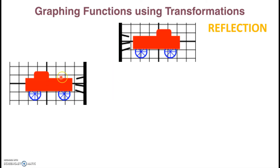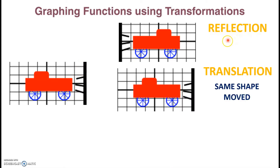The first transformation is a reflection. When you make a reflection, you get a mirror image of the object — that is called reflection. The second transformation involves the same shape, but we move the object to a different location.